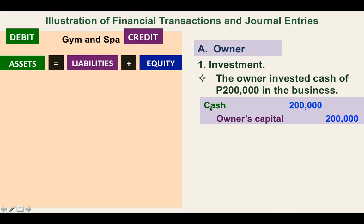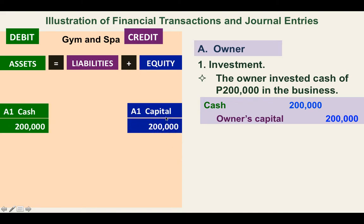If we analyze this entry in the accounting equation, there is an increase in the asset of cash by $200,000 because it's a debit. In owner's capital, it's a credit, so there is an increase in capital by $200,000. There is an increase in cash by $200,000. Next is the transaction with the owner: withdrawal of capital investment.